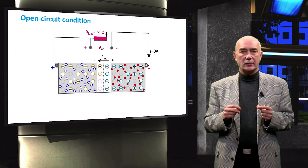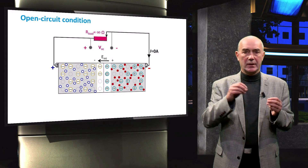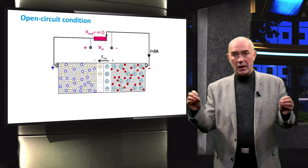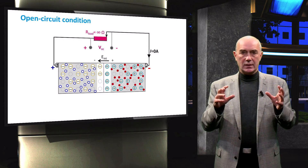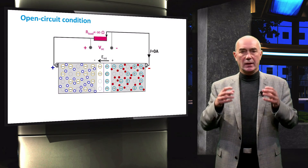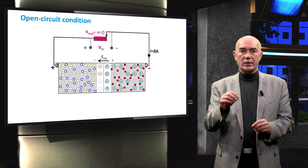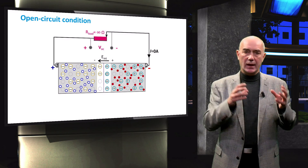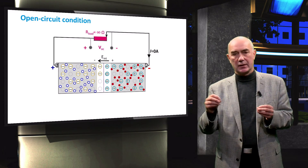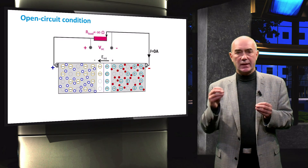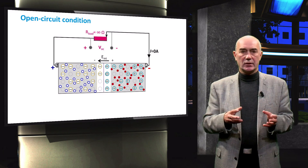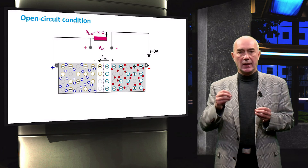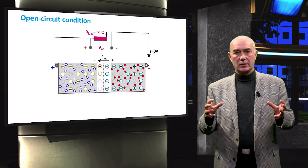When there is no external electrical contact between the electrodes, or when the load resistance is infinite, no current flows in the external circuit — this is the open-circuit condition. Under open-circuit conditions, we measure the open-circuit voltage between the electrodes, representing the difference in electrochemical potential of electrons. Inside the diode, steady state is characterized by generation and recombination of photogenerated carriers and a balance between diffusion currents of majority carriers and drift currents of photogenerated minority carriers across the depletion region.